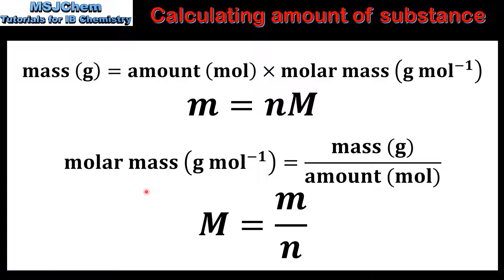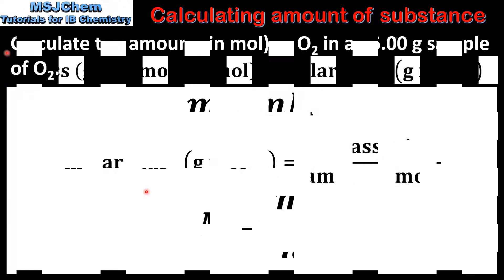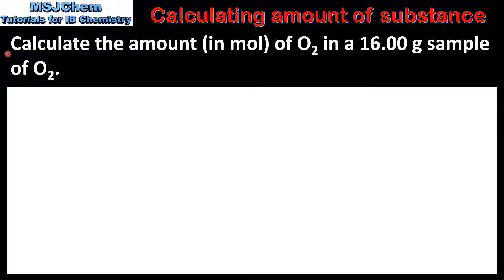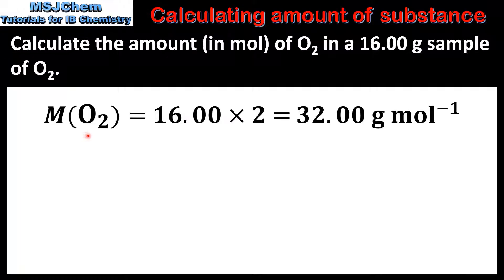Next we'll look at some examples. The first example is to calculate the amount in moles of oxygen in a 16 gram sample. The first step is to determine the molar mass of the substance.